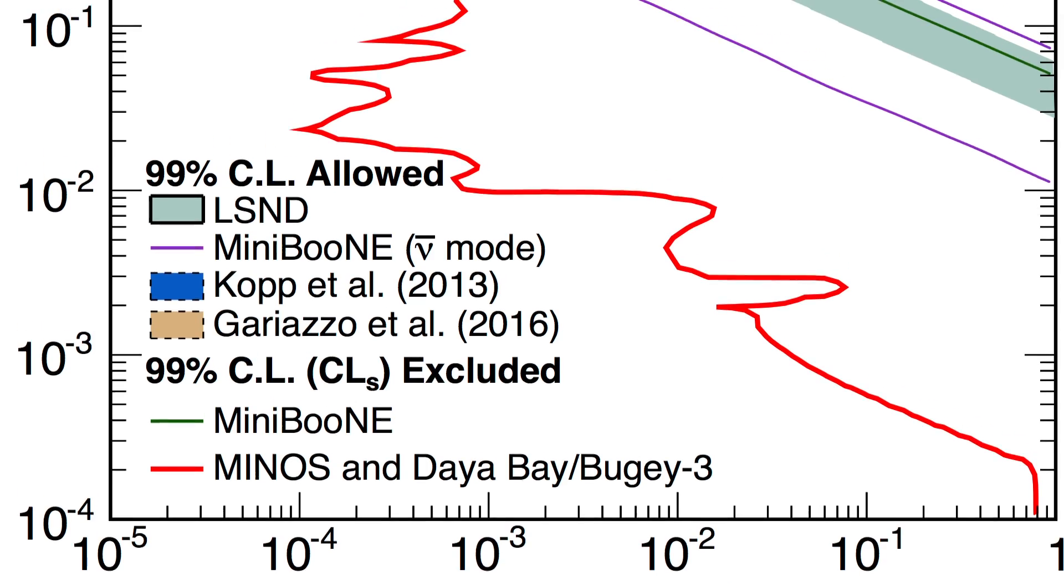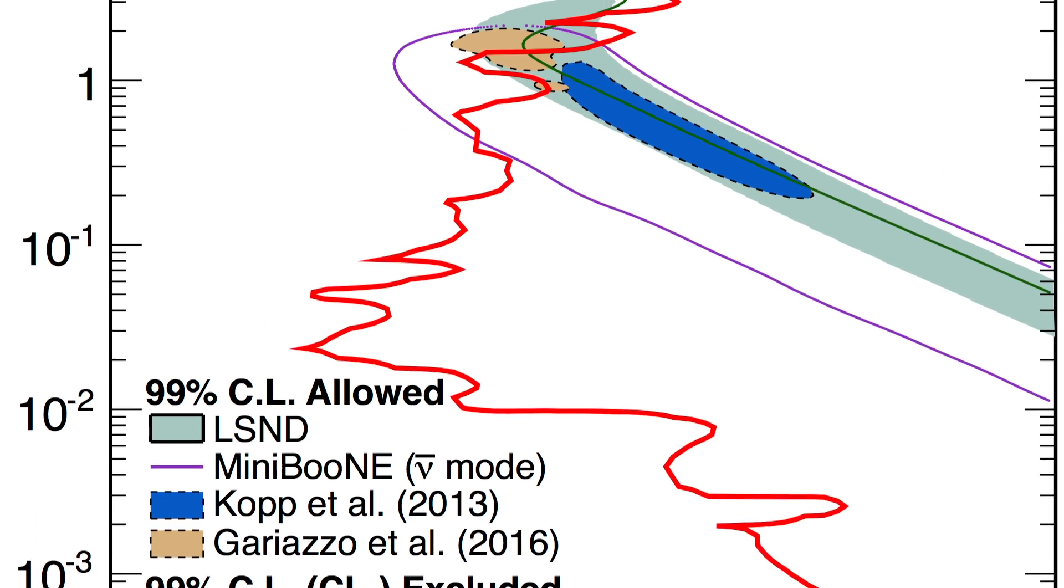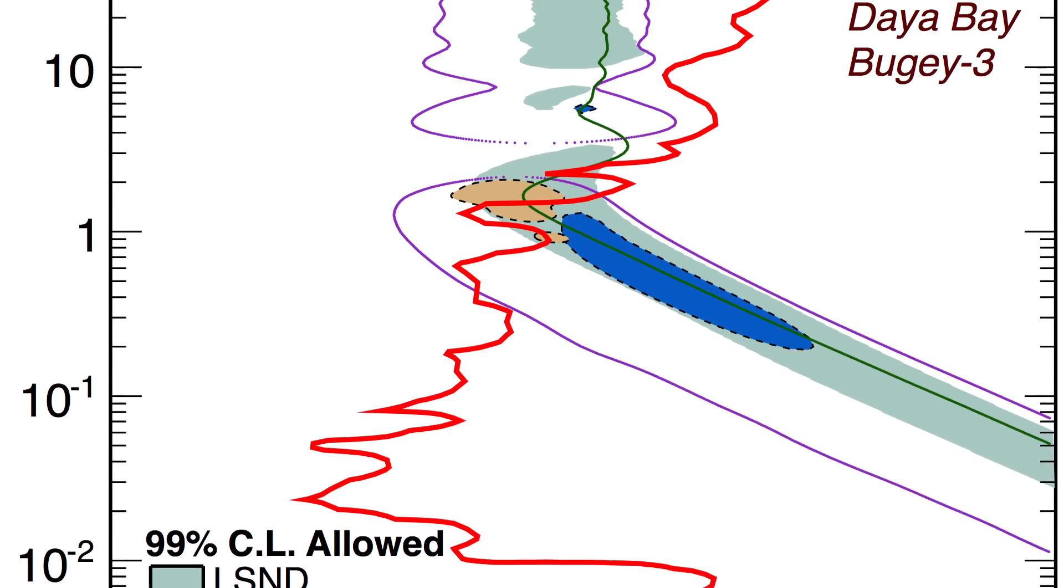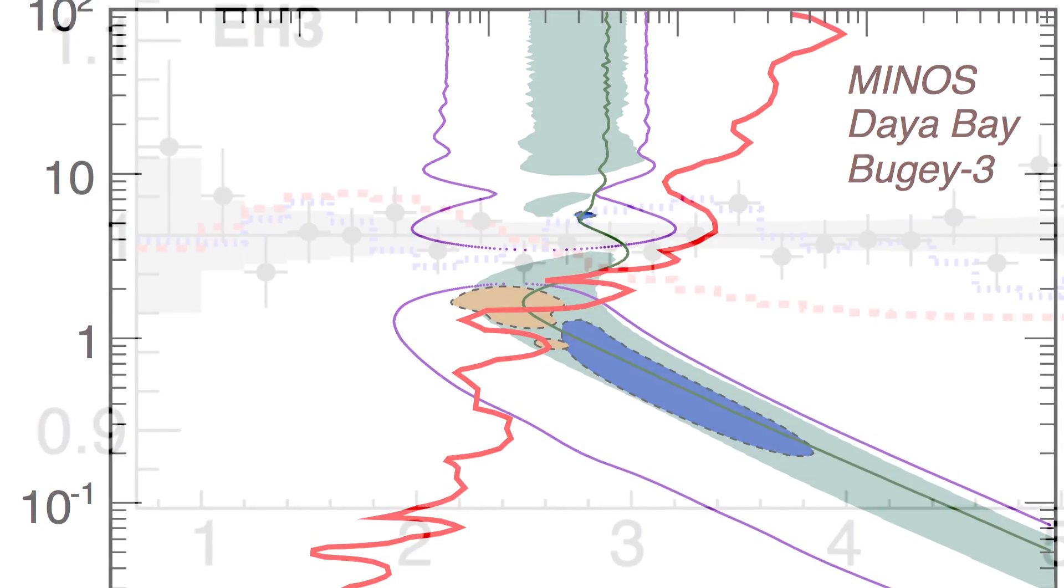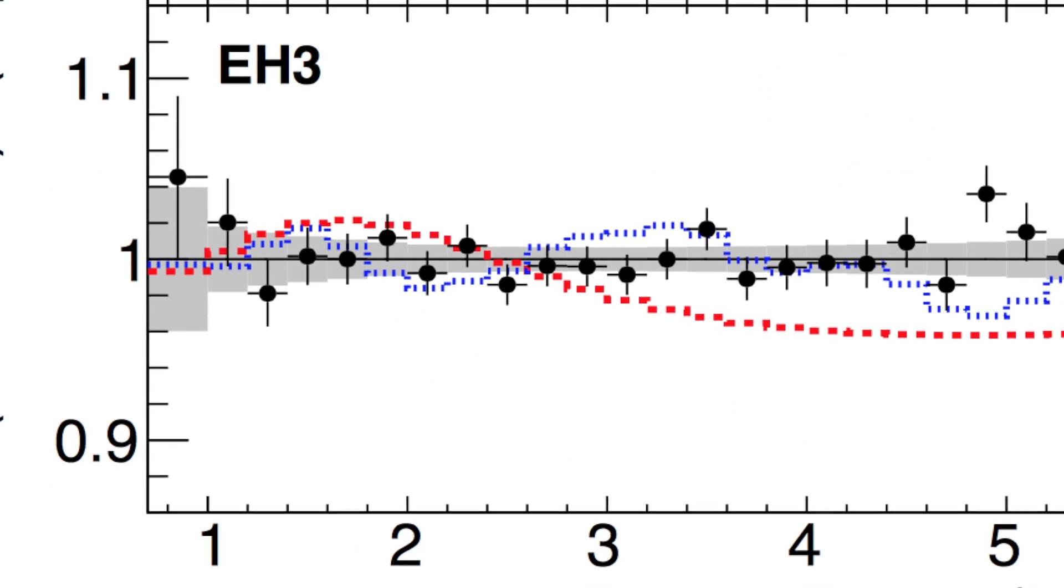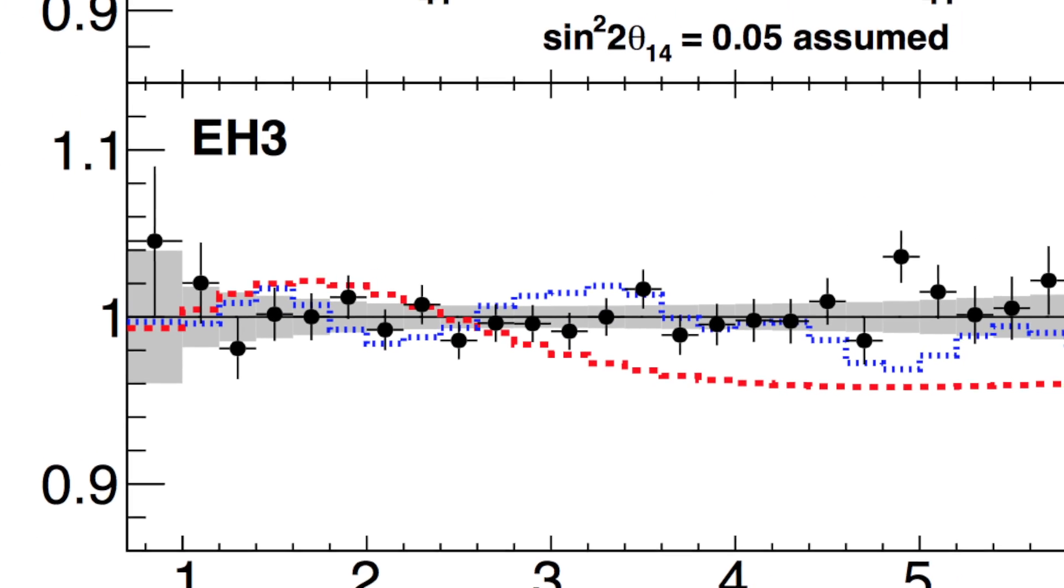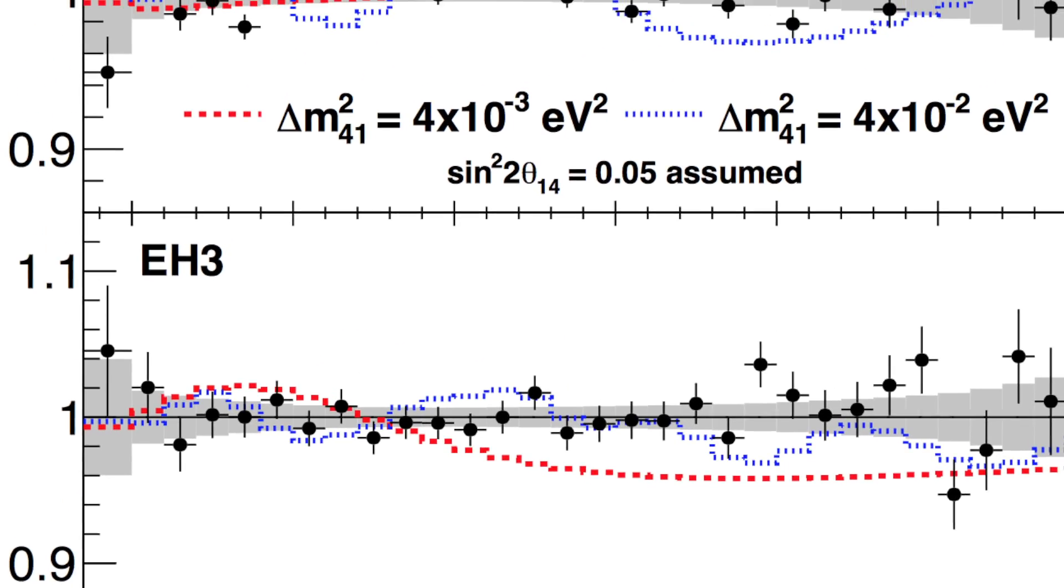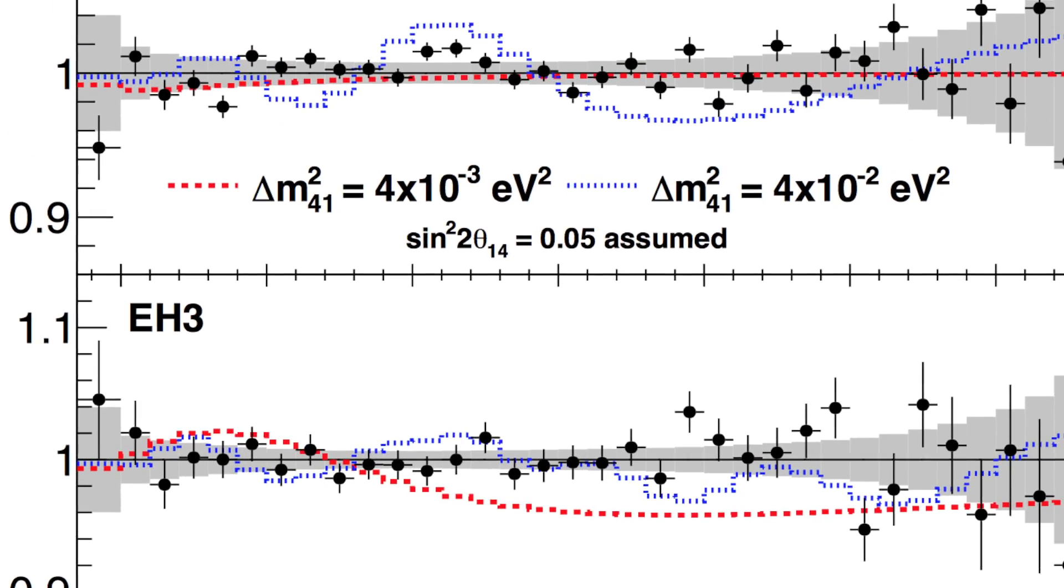So this whole idea of sterile or massive or right-handed neutrinos is all very speculative. In fact, the data supporting any of these ideas are very, very thin. I mean there are a few measurements here and there that one can explain by invoking sterile neutrinos, but there are often other experiments that rule out whatever idea the first experiment hypothesized. Clearly one of them are wrong.